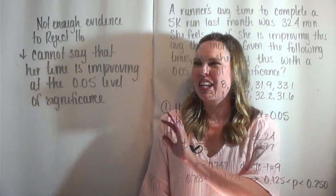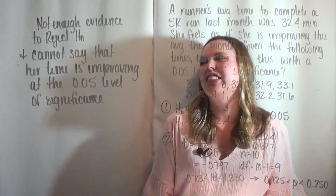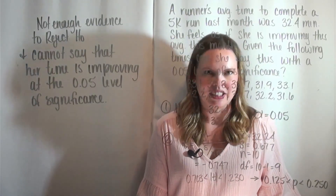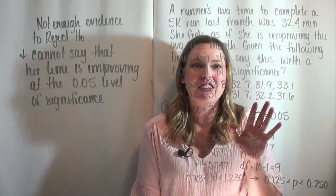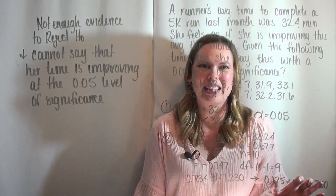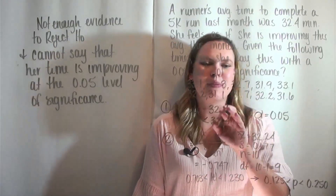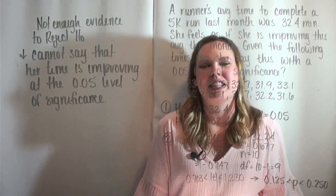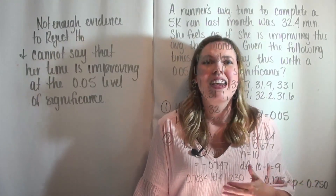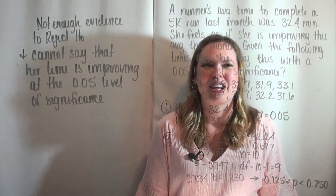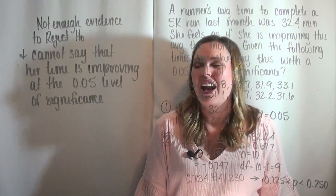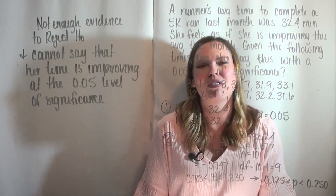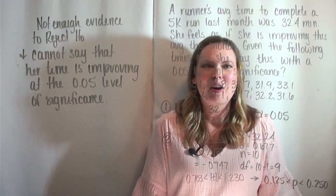To interpret in context: we do not have enough evidence to reject the null hypothesis and cannot say that her time is improving at the 0.05 level of significance. If she had set a different level of significance, or if the sample mean were a bit lower, or if she collects more runs this month, she might then have enough evidence to reject the null.